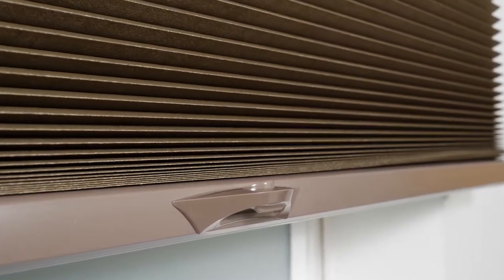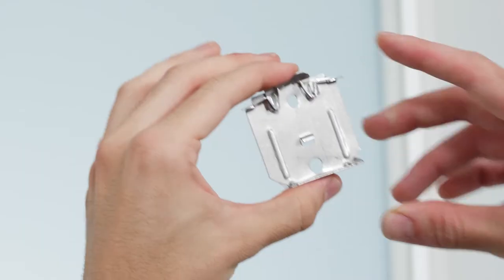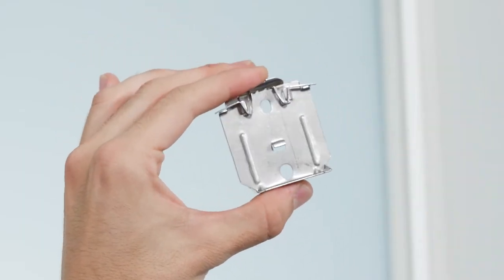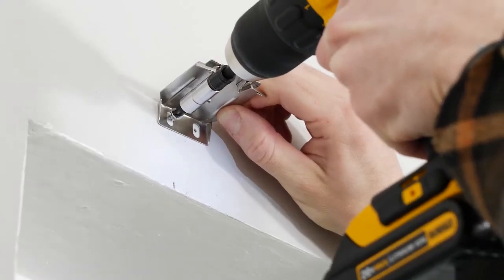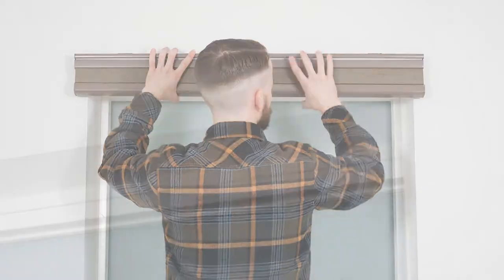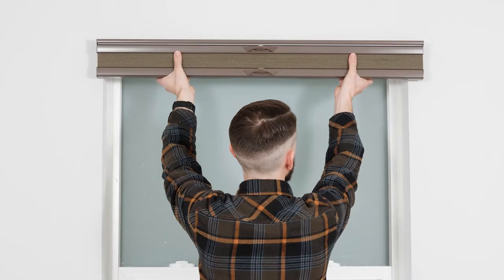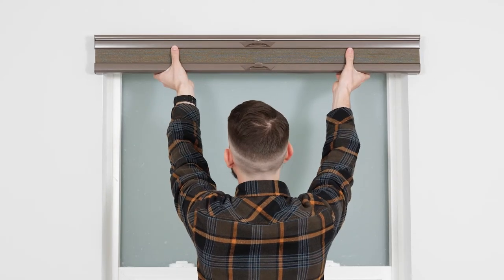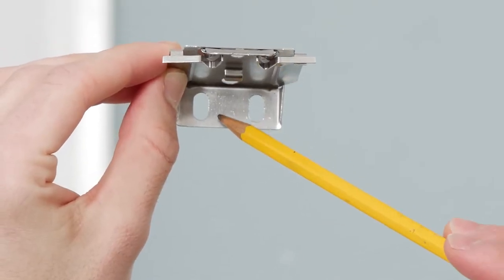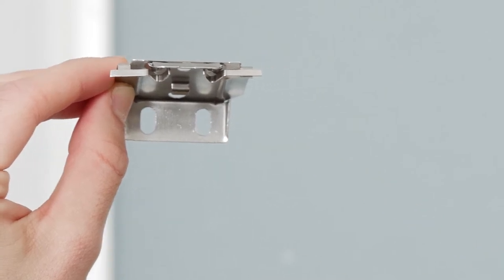One of the reasons people like cellular shades is that they're so easy to put up. The brackets have this cool little spring on them, so all you have to do is screw them in and click the headrail into place. The first step is to determine where to place your brackets. Outside mount shades are hung above the window. The brackets will be screwed in place through the two holes on the back of each bracket.